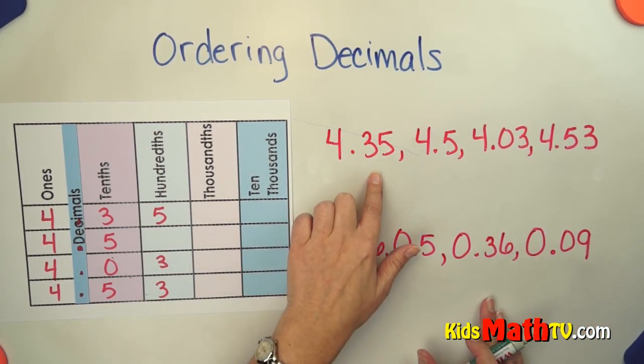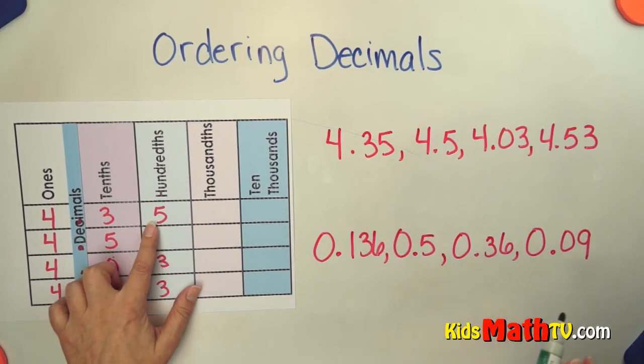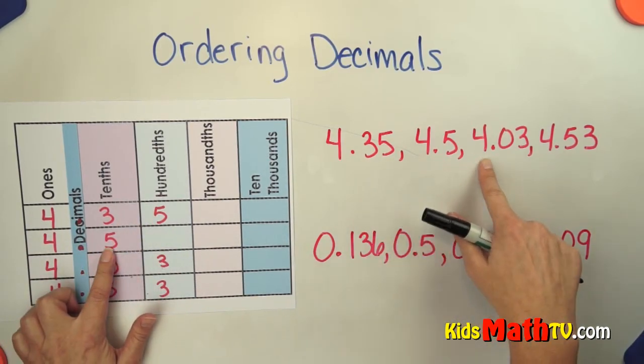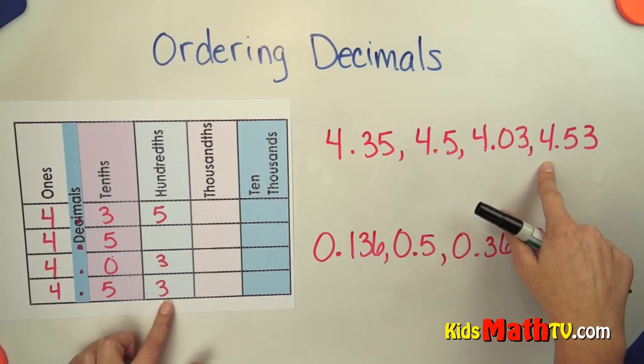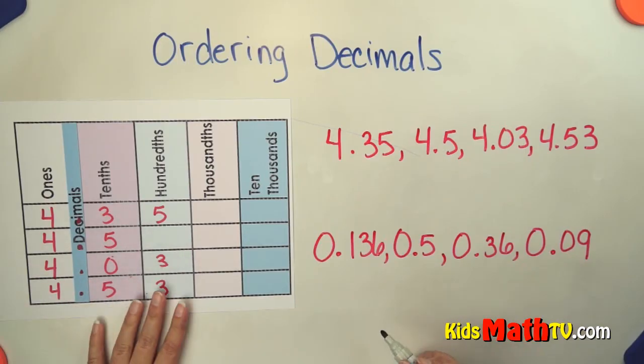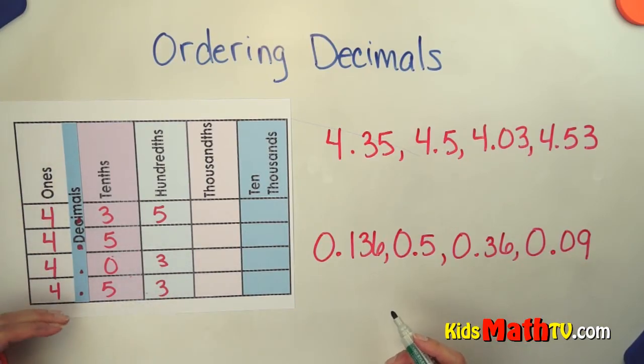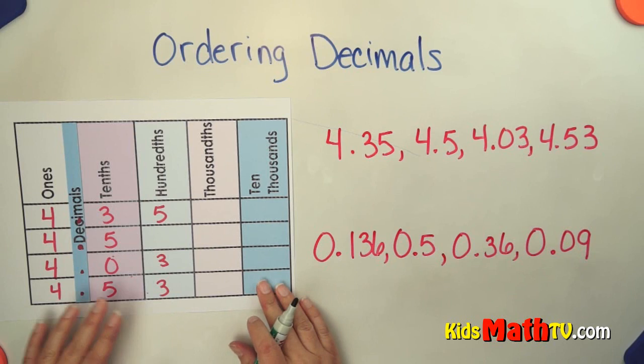So we have 4 and 35 hundredths, and I've written that here, 4 and 35 hundredths, 4 and 5 tenths, 4 and 3 hundredths, and 4 and 53 hundredths. These can be confusing because they have a lot of the same digits. But if we put them into a place value chart, it can be very easy.